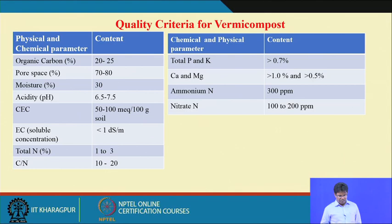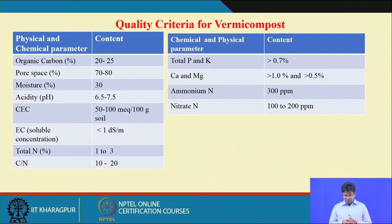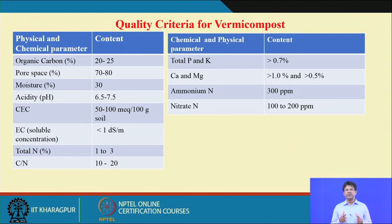Looking at physical and chemical properties: organic carbon content should be around 20–25%, pore space around 70%, moisture content at least 30%. pH should be in the neutral range of 6.5–7.5, cation exchange capacity 50–100 milliequivalents per 100 g, electrical conductivity less than 1 dS/m. Total nitrogen should be more than 1%, ideally increasing to 3–4%, to minimize chemical fertilizer use, since nitrogen, phosphorus, and potash drive crop growth and yield.